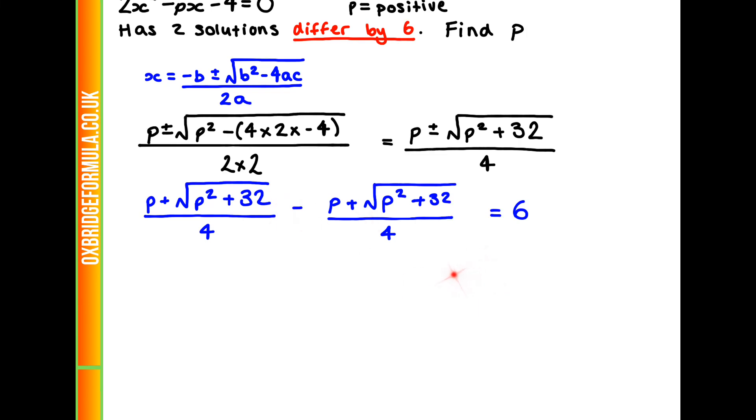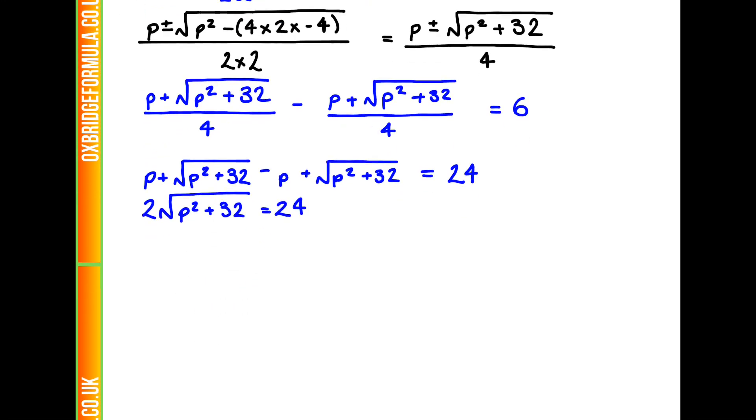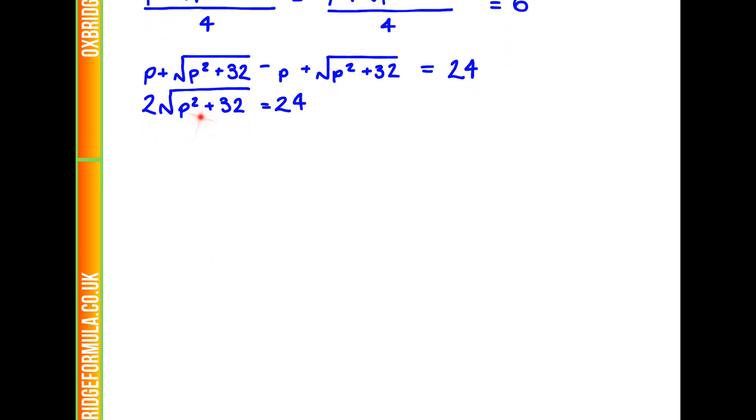We can just simplify this down again. That gets us to p plus the square root of p squared plus 32 minus p plus the square root of p squared plus 32 equals 24. We've just times it by 4. We can then simplify this down again into 2 root of p squared plus 32 is 24. Divide through by 2. We get the square root of p squared plus 32 is 12.